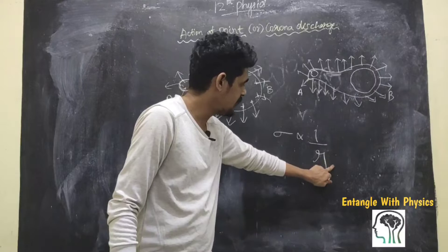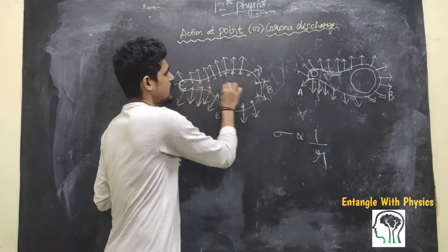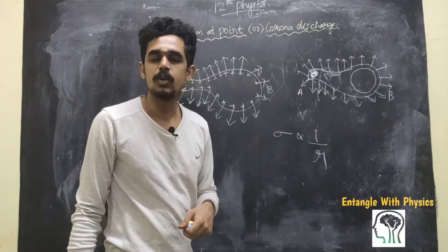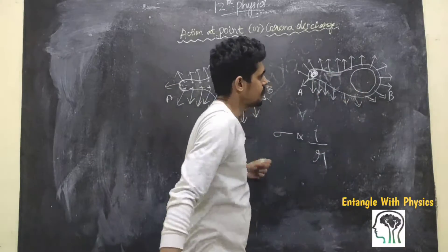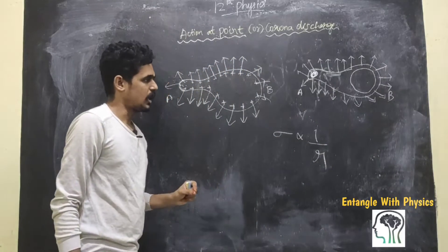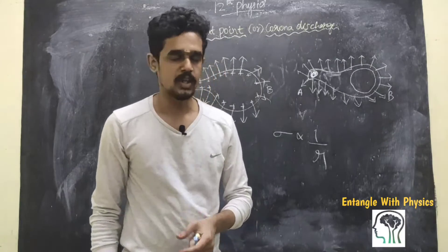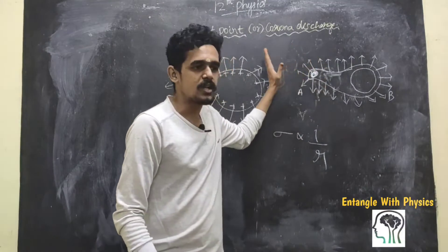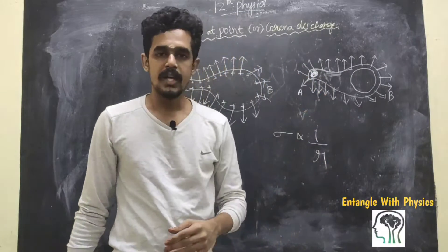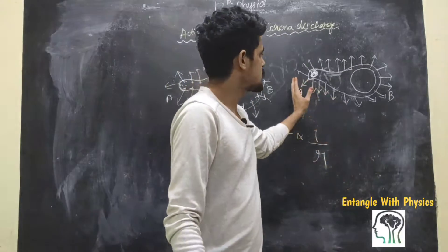When the radius is very small, the surface charge density is very high. When the radius is very large, the surface charge density is very low. So if you look at the sharp edge, the electric field is very high where surface charge density is very high, and where the surface charge density is less, the electric field is also low.